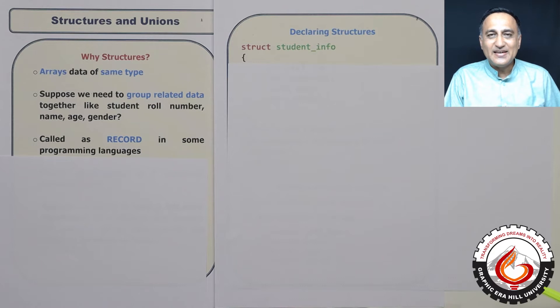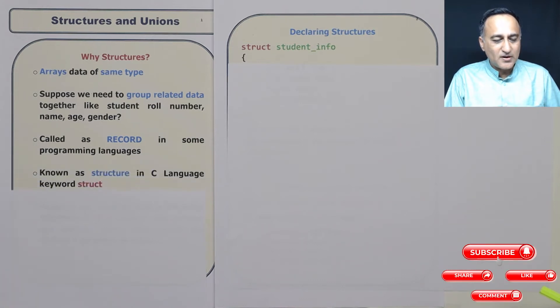In C, it is referred to by the keyword structure. So a structure in C language allows you to group data of different data types, but having some relationship between each other.